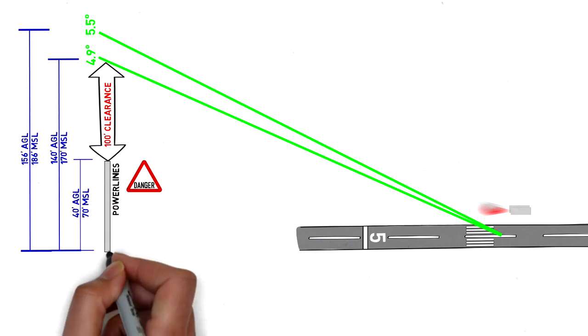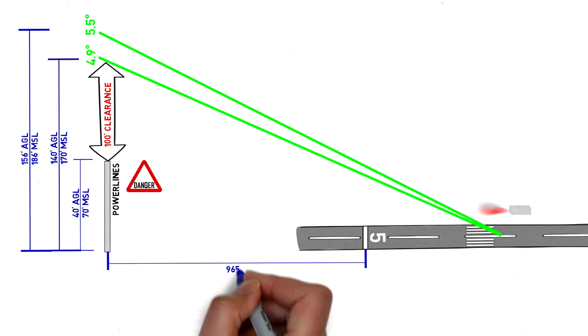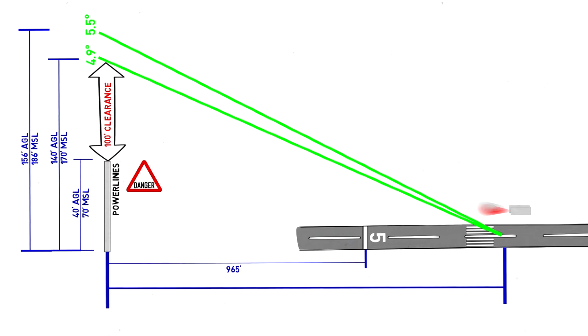Looking at it laterally, the power lines are about 965 feet before the threshold, which is about 1,670 feet before the touchdown area on the runway.